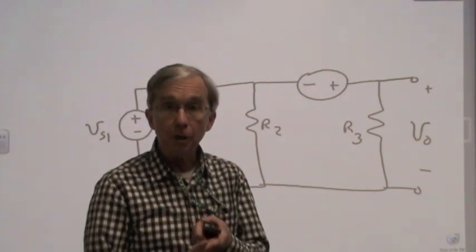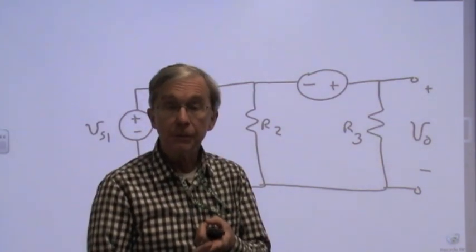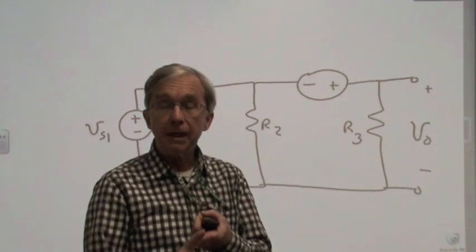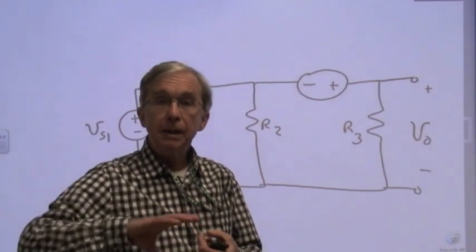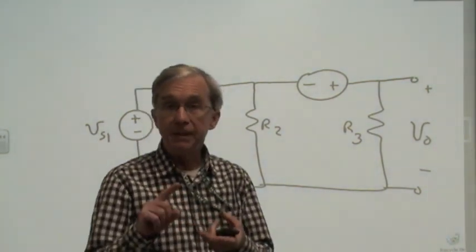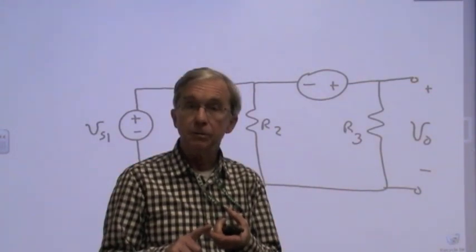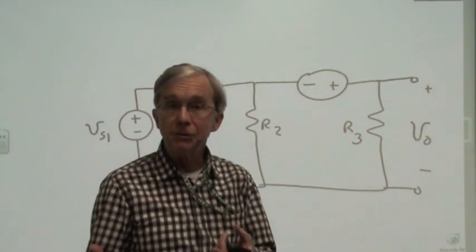I'll turn Vs2 off, that is, set it to zero, find the value of Vout just due to Vs1, and then vice versa, turn Vs1 off, turn it to zero, and find the contribution just due to Vs2.